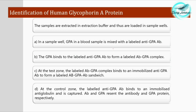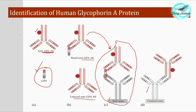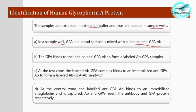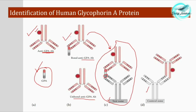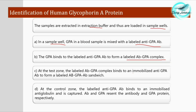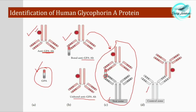In procedural form: samples are extracted in extraction buffer and loaded into the sample wells. In the sample well, the GPA in the blood sample mixes with the labeled anti-GPA antibody, forming a labeled antibody-GPA complex. At the test zone, this labeled antibody-GPA complex binds to the immobilized anti-GPA antibody, forming a labeled antibody-GPA-antibody sandwich — an antibody-antigen-antibody complex at the test zone.